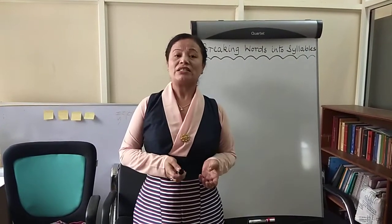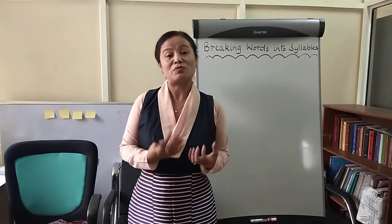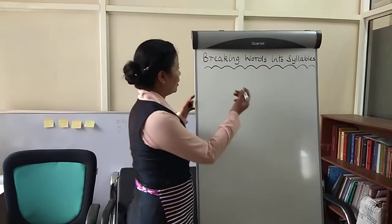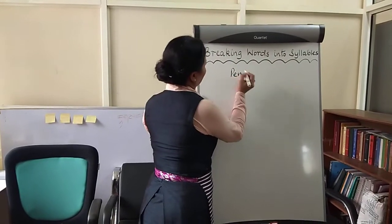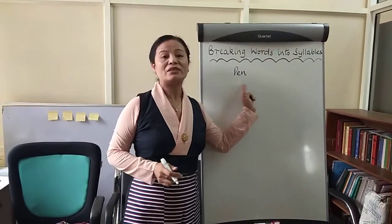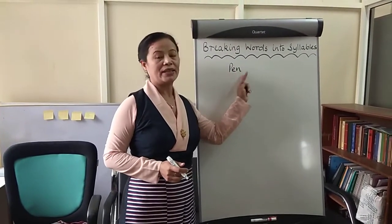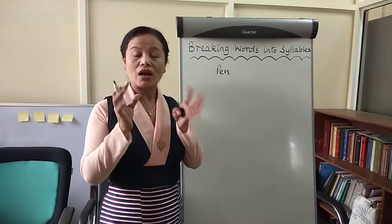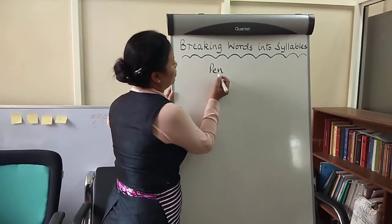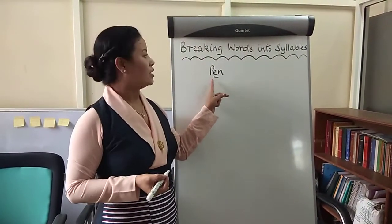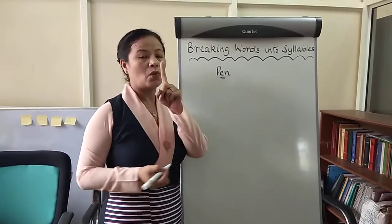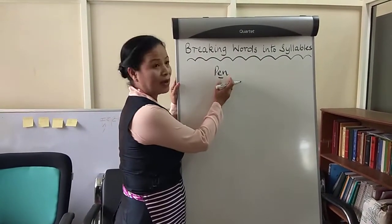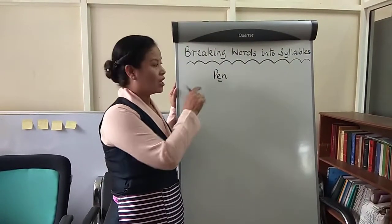Breaking words into syllables makes it easier to read because we have smaller chunks to read. So how can we break a word into syllables? If I have this word — 'pen' — you all know this is a one-syllable word. As I told you in my last video, syllables contain a vowel sound. In 'pen,' E is the vowel, so this is a one-syllable word. And since the vowel is closed by a consonant, N, this is an example of a closed syllable.